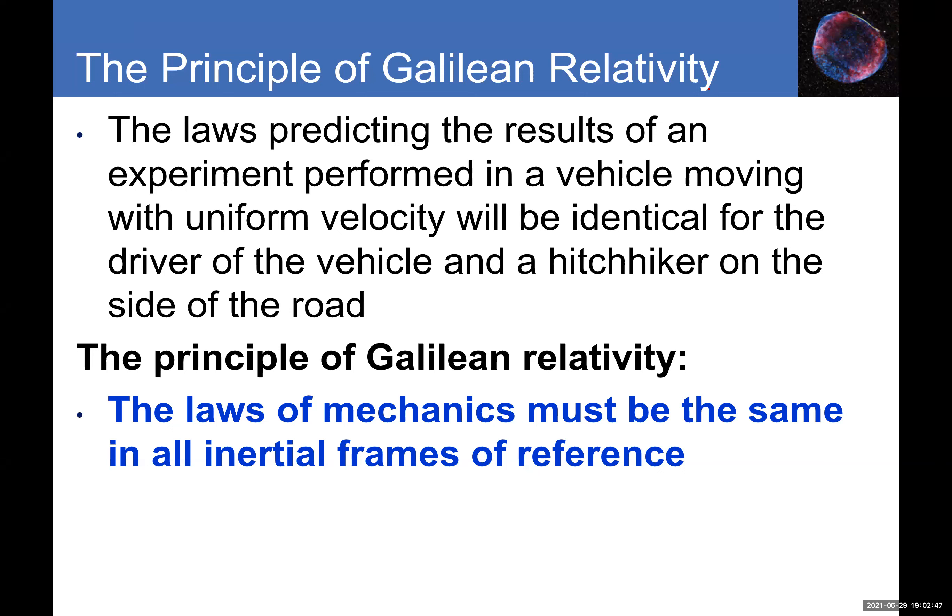The laws predicting the results of an experiment performed in a vehicle moving with uniform velocity will be identical for the driver and a hitchhiker on the side of the road. As long as two observers have constant velocity relative to one another — even if different — Newton's laws of motion will be obeyed, and their measurements will agree. This is the principle of Galilean relativity, which goes back to the time of Galileo and Isaac Newton.